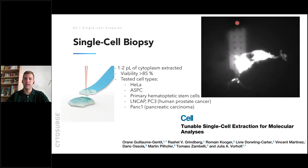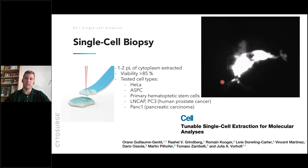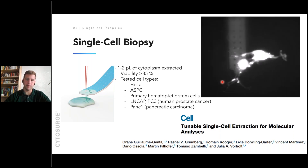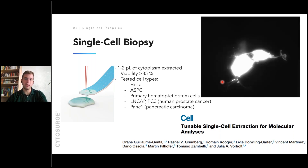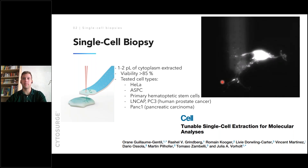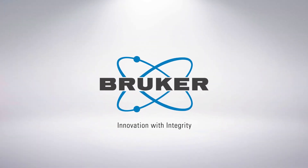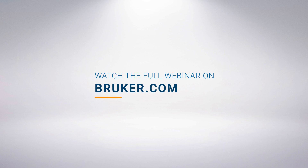There is a clear interface forming between the cytoplasm and the channel contents because the channel is filled with mineral oil, preventing the cytoplasm from mixing with what's already in the channel — this small one to two picoliter sample is too valuable to dilute. Despite taking up to 70% of cytoplasmic volume, cell viability after this operation is at least 85%, comparable to cell loss in conventional trypsin-based dissociation. Multiple cell types including cancer cells and stem cells have been tested successfully.